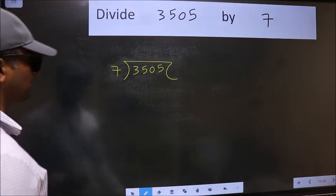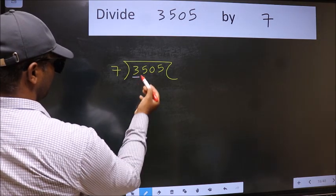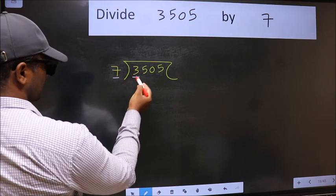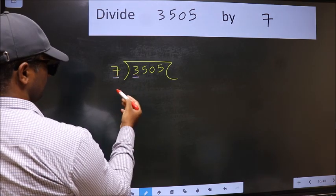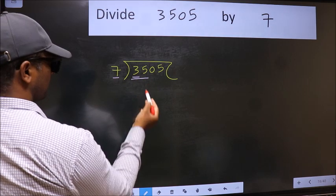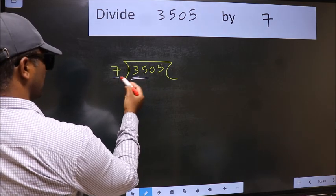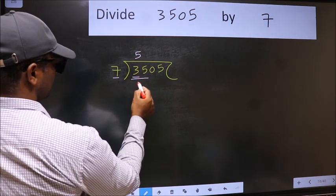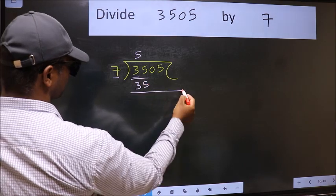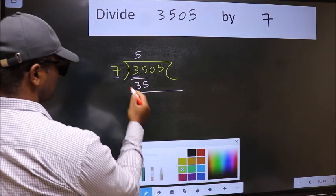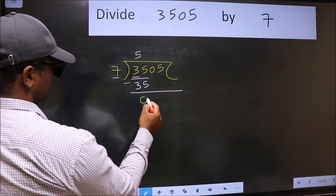Here we have 3 and here 7. 3 is smaller than 7. So we should take two numbers, 35. When do we get 35 in 7 table? 7 fives 35. Now we should subtract. We get 0.